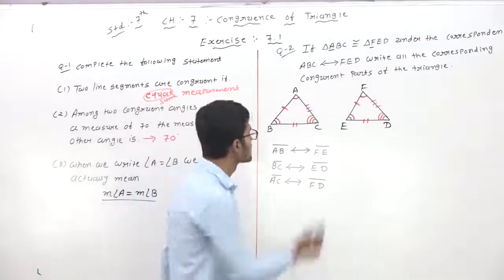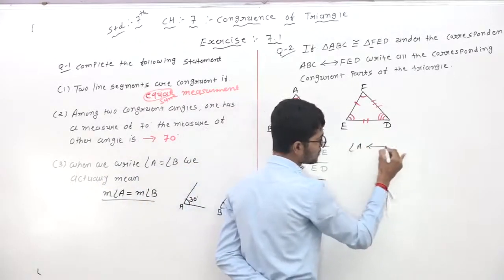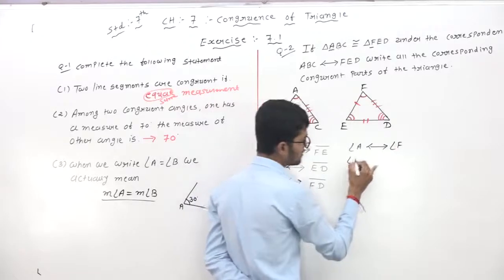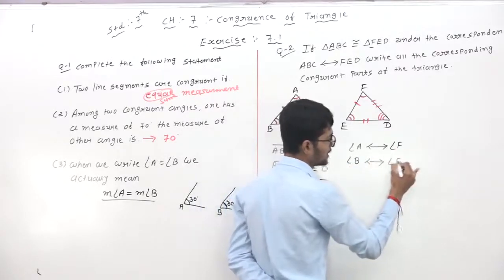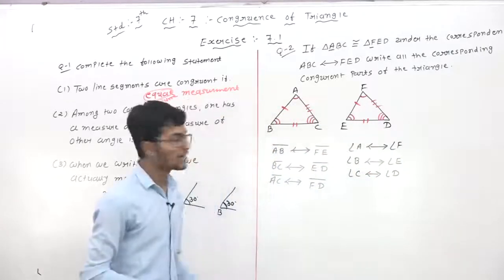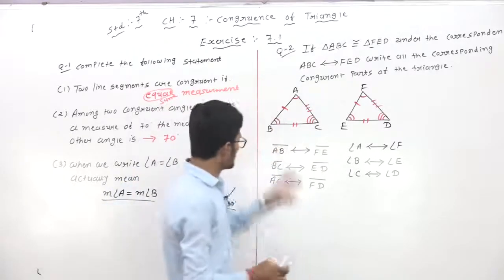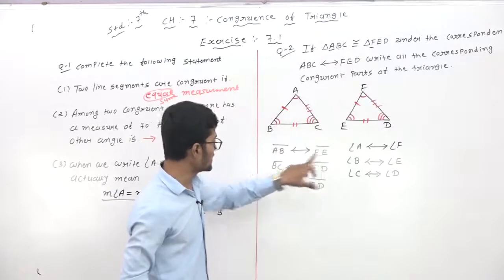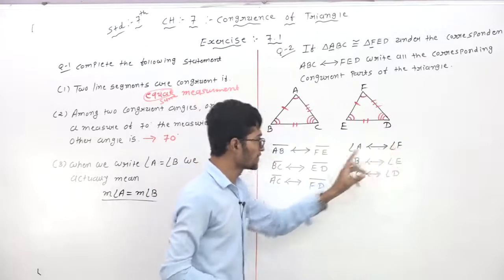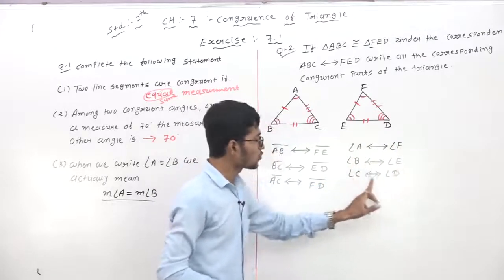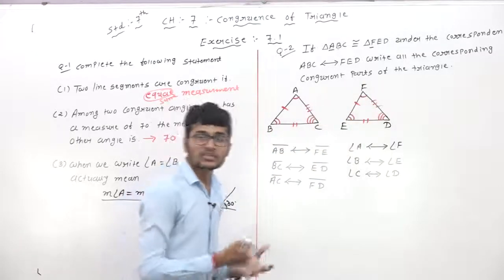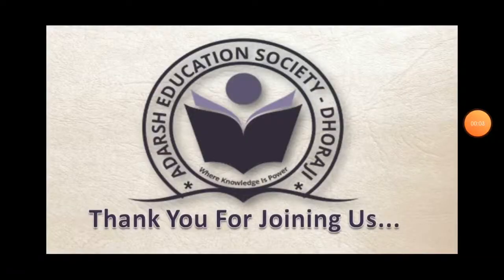Now the corresponding angles: angle A corresponds to angle F; angle B corresponds to angle E; angle C corresponds to angle D. So all the corresponding congruent parts are: AB to FE, BC to ED, AC to FD, angle A to angle F, angle B to angle E, and angle C to angle D. Thank you for joining us.